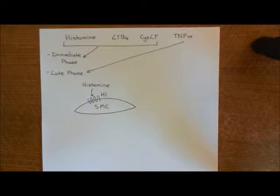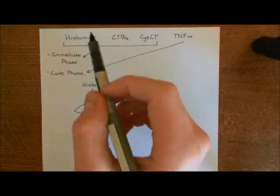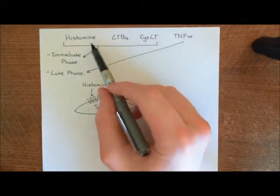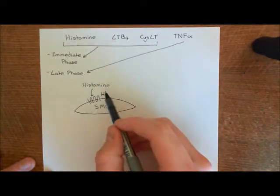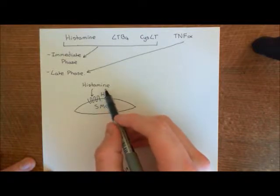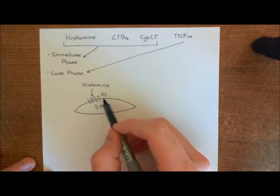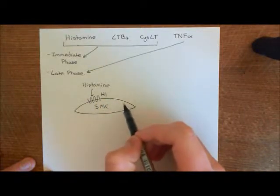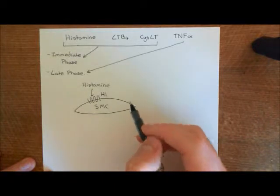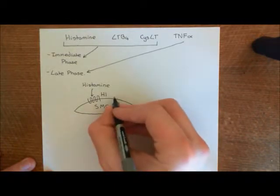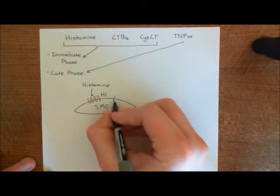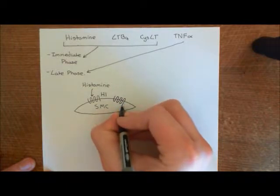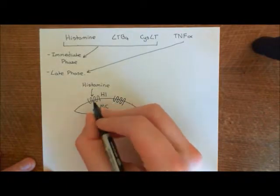The immediate phase is caused by histamine, leukotriene B4, and cystinyl leukotrienes. The histamine is going to diffuse back from the lamina propria and act on H1 receptors on the surface of the smooth muscle cells in the smooth muscle cell layer which surrounds the bronchus. Meanwhile, the cystinyl leukotrienes are also going to activate contraction of the smooth muscle cells. They have a G-protein coupled receptor that is GQ coupled, the same as the H1 receptor.